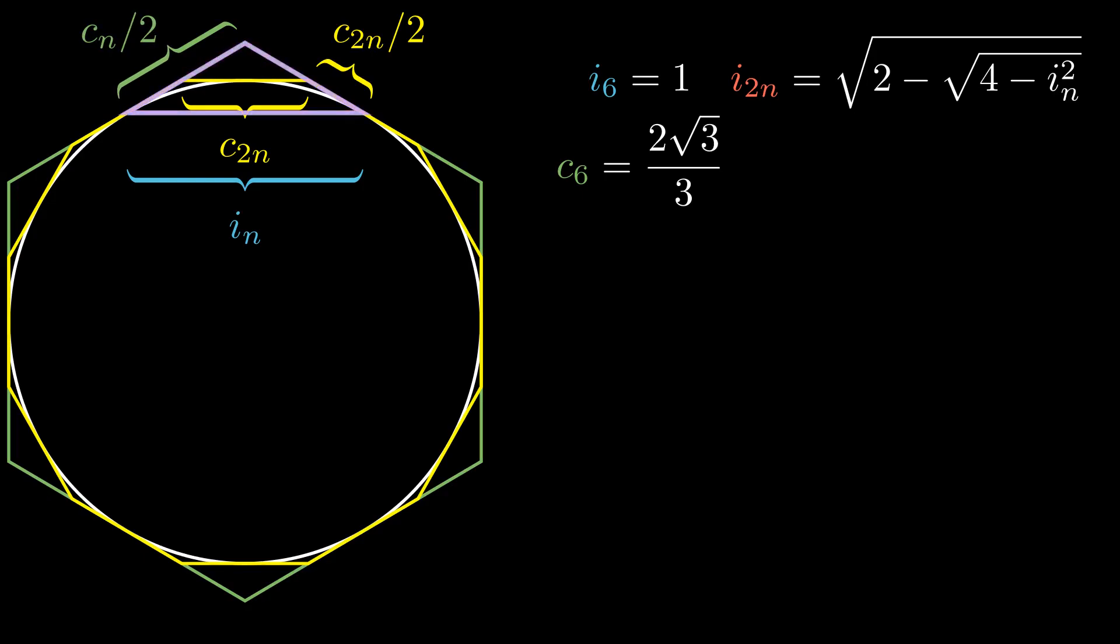This triangle and this triangle are both isosceles and share the same angle at their apexes, so they are similar, and their relation can be expressed as two equal ratios. After simplifying the equation, we get the formula for finding c_2n.